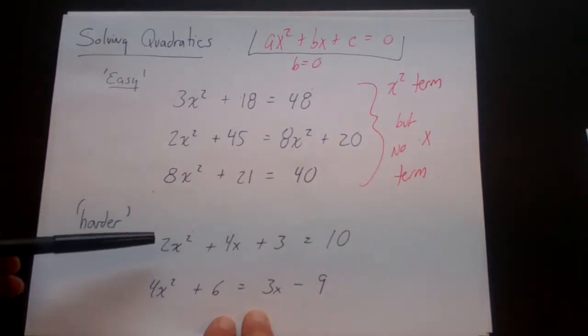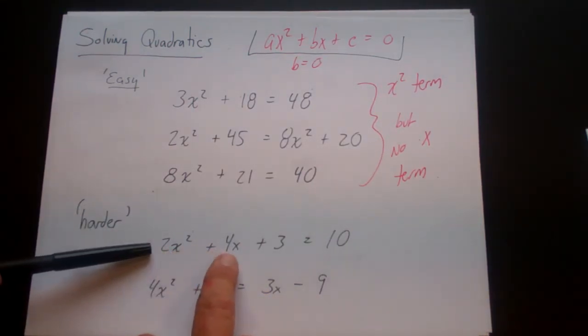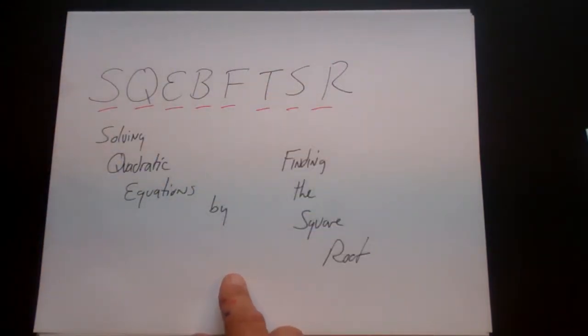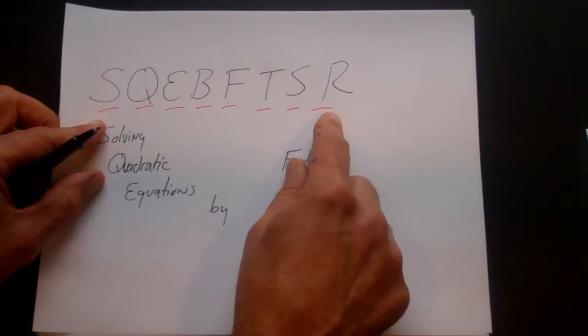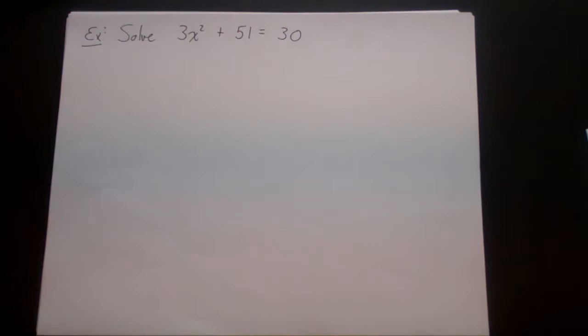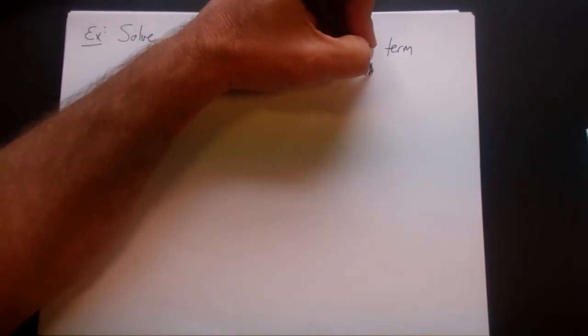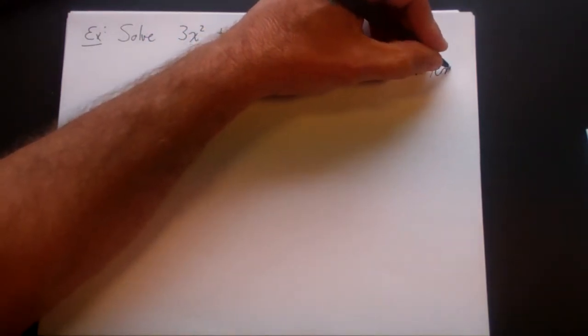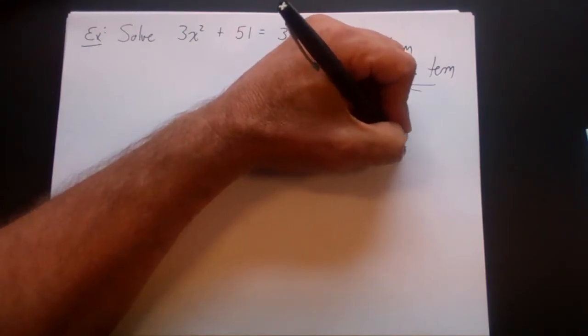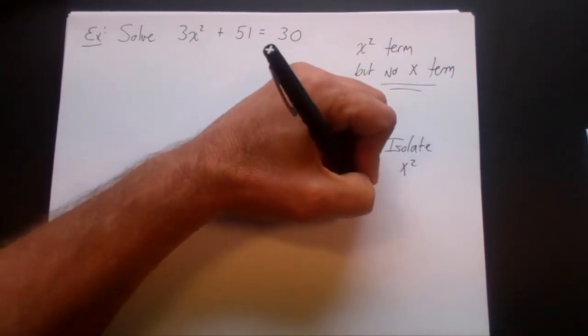The problems we're not talking about are harder problems, like 2x squared plus 4x plus 3 — here there's an x squared and an x term. Those will be covered in the following video. So let's look at a sample problem. You can use the square footer terminology if you want, it doesn't matter. When we have a square footer problem, there are only two steps: step one, isolate x squared; and step two, take the square root.